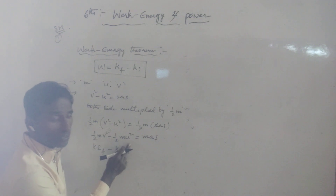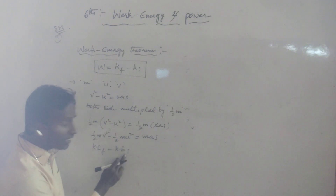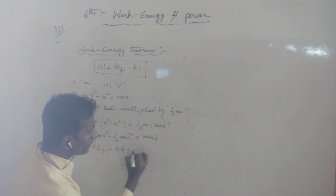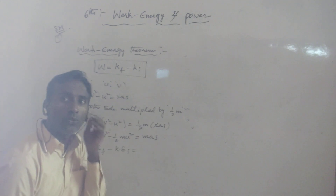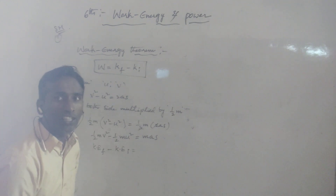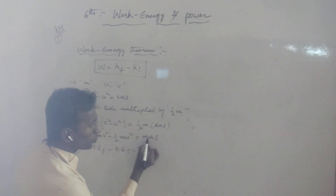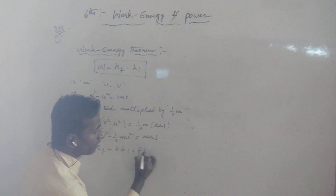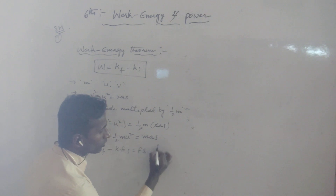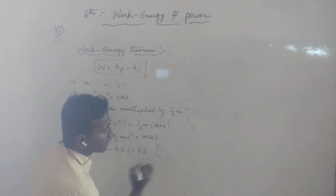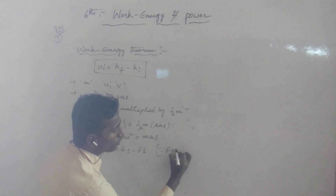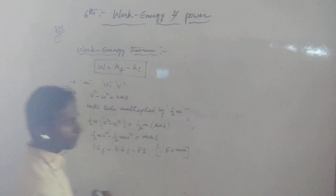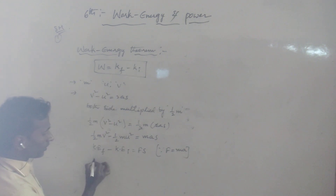U means initial velocity. For this equation we can write the initial kinetic energy. According to Newton's second law, F is equals to MA. In place of MA we can write F, so F into S. Since F is equals to MA, and next we can write here: